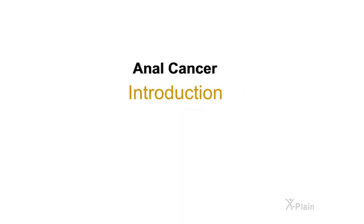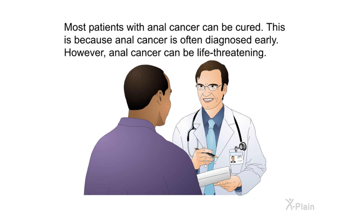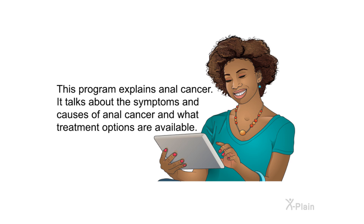Anal cancer happens when cancerous cells form in the tissues of the anus. Anal cancer is much less common than cancer of the colon or rectum. It is a fairly rare cancer, but it is becoming more common. Most patients with anal cancer can be cured, because anal cancer is often diagnosed early. However, anal cancer can be life-threatening. This program explains anal cancer, its symptoms, causes, and available treatment options.